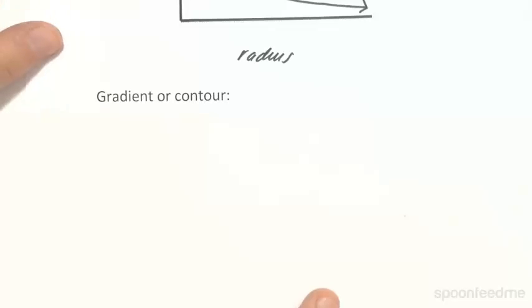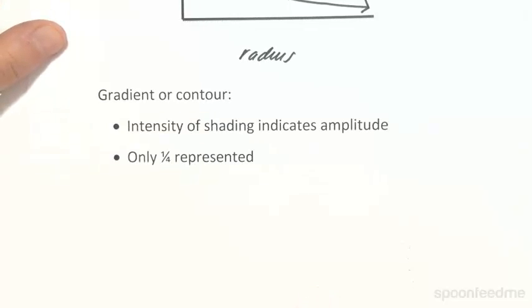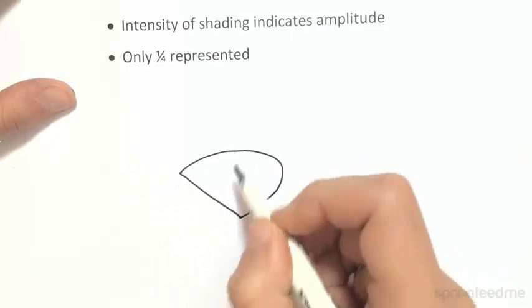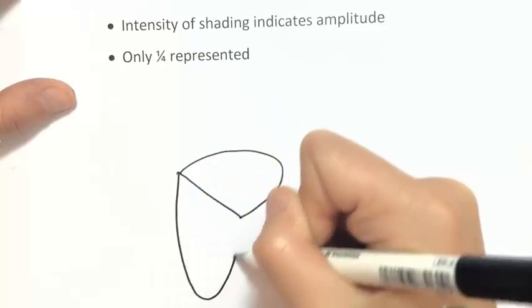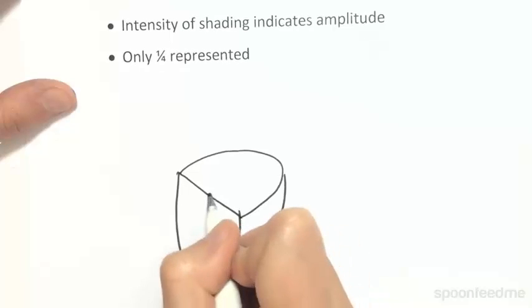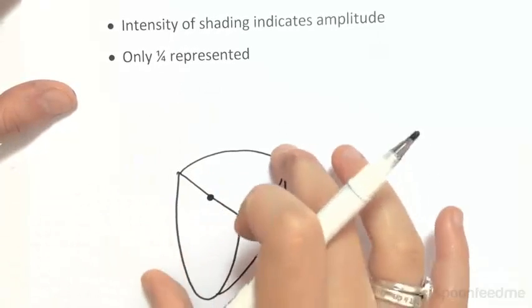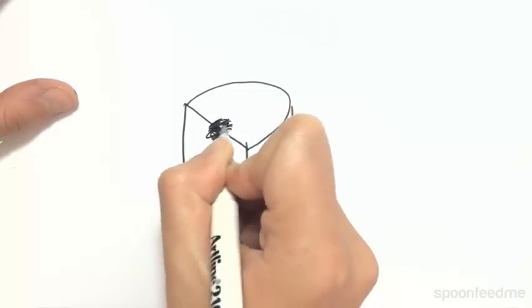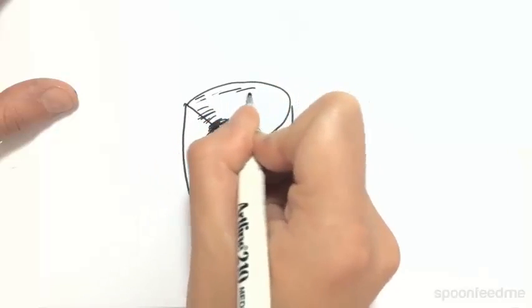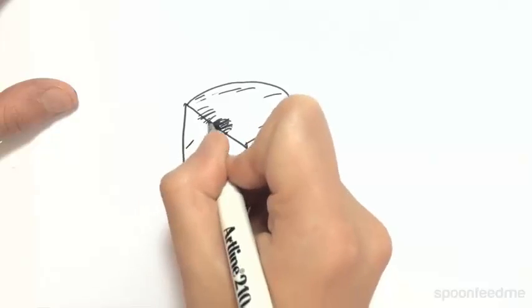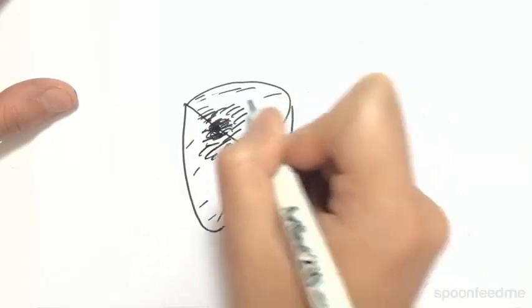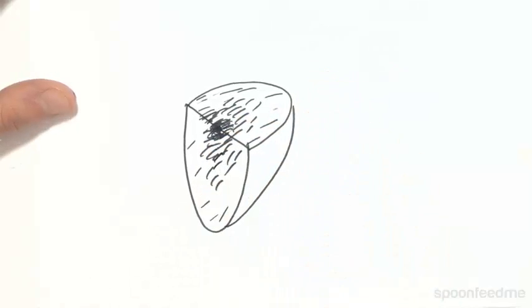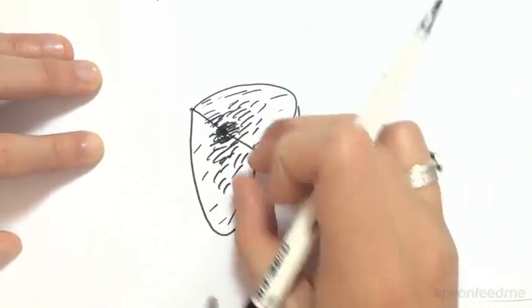We can also represent it as a gradient or contour plot, where the intensity of the shading indicates the amplitude and only one quarter is represented. If this is our nucleus, we have our highest amplitude here. As we get further from the nucleus, we get the amplitude decreasing, and that's shown by the decrease in shading — indicating our decrease in amplitude.